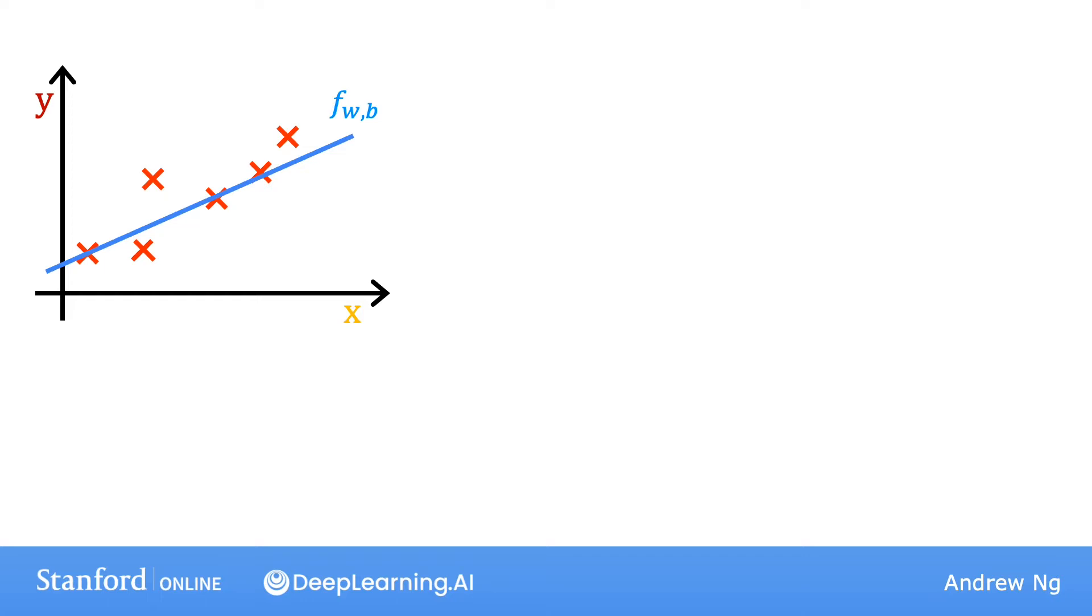Just to remind you of some notation, a training example like this point here is defined by x superscript i, y superscript i, where y is the target. For a given input x_i, the function f also makes a predictive value for y. The value that it predicts for y is y hat i, shown here. For our choice of a model, f of x_i is w times x_i plus b. Stated differently, the prediction y hat i is f_wb of x_i, which is equal to w x_i plus b.